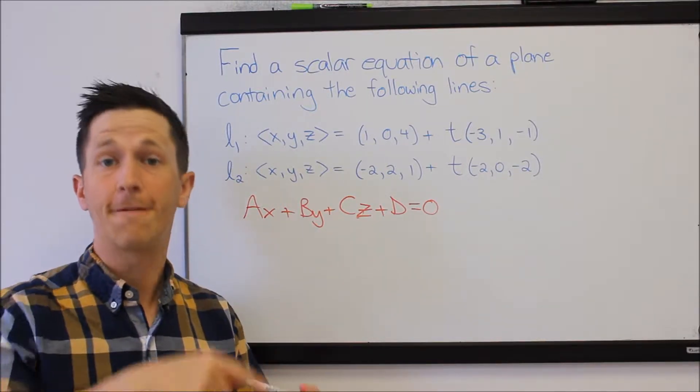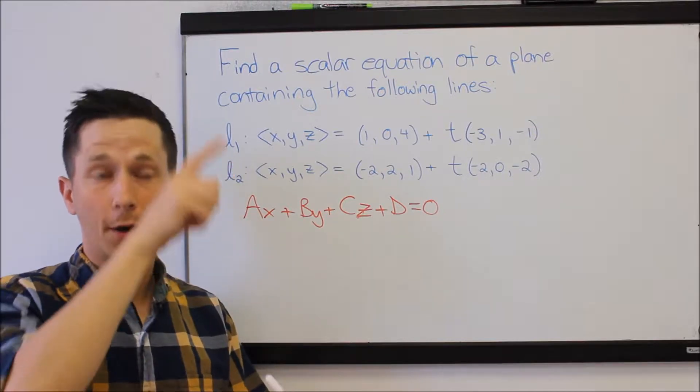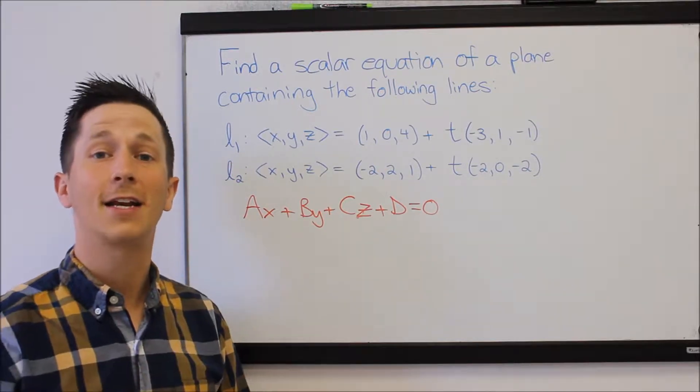A normal vector is just a vector that comes out of the plane or goes through the plane and hits it at a 90 degree angle.